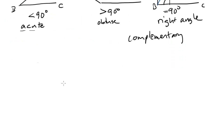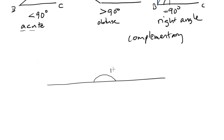Imagine now I draw a straight line. The number of degrees in a straight line is 180. So this is 180 degrees, and you can imagine continuing around the circle — another 180 degrees — and now you have a full circle of 360 degrees.